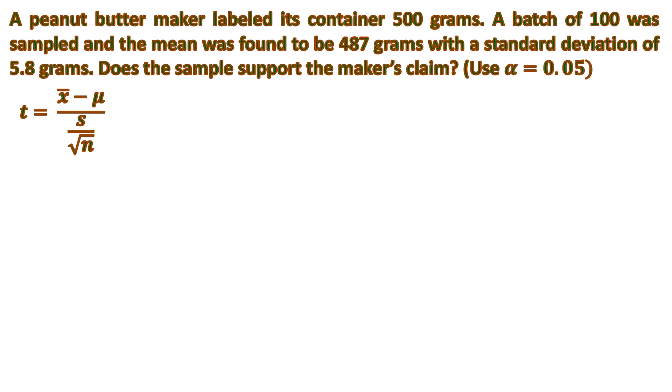Here's the formula to find the t-value: the sample mean minus the expected mean or population mean, over the standard error. The formula for standard error is the standard deviation over the square root of n, or the number of samples. Let us substitute. We have the sample mean is 487, the expected mean is 500, and the standard deviation is 5.8 over the square root of 100.